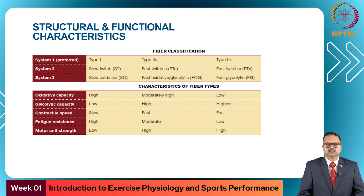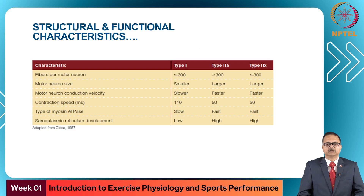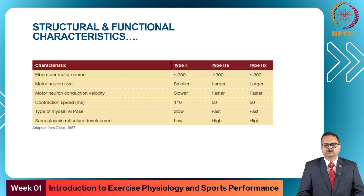Type 2x fibers have low oxidative capacity, the highest glycolytic capacity, fast contractile speed, and low fatigue resistance. Type 1 fibers have fewer than 300 fibers per motor neuron, a smaller motor neuron size, slower conduction velocity, contraction speed of 110 ms, slow myosin ATPase activity, and slow sarcoplasmic reticulum development. Type 2a fibers have more than 300 fibers per motor neuron, larger motor neuron size, faster conduction velocity, contraction speed of 50 ms, fast myosin ATPase activity, and high sarcoplasmic reticulum development.